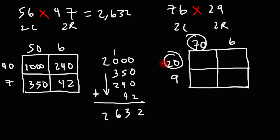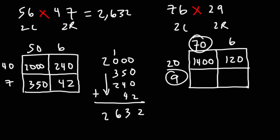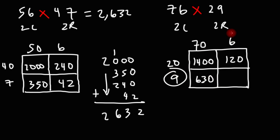Now let's multiply 20 by 70. 2 times 7 is 14; add the two zeros, we'll get 1,400. 20 times 6: if you have six $20 bills, you have $120. 70 times 9: 7 times 9 is 63; add the zero, you get 630. And then 9 times 6 is 54.